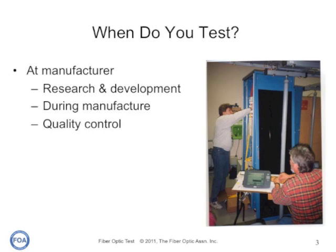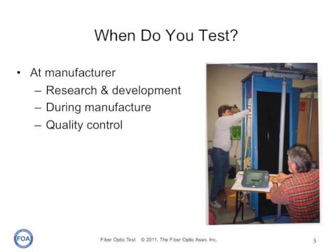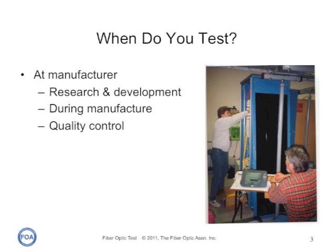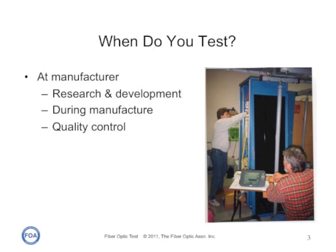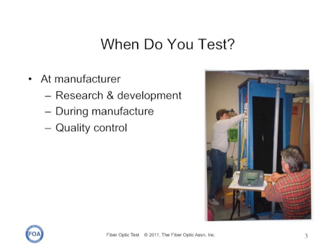Manufacturers test components as they're developing them in the research and development phase, as they're getting ready for manufacture. During the manufacturing process, they'll test what needs to be tested to ensure the product meets its specifications. And then after manufacture, a certain number of products will be retested for quality control.